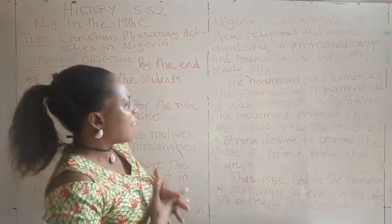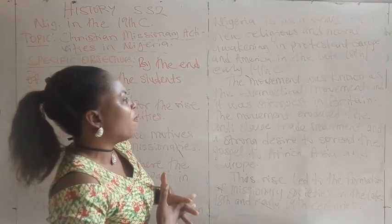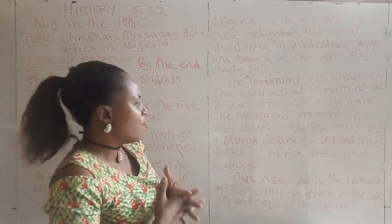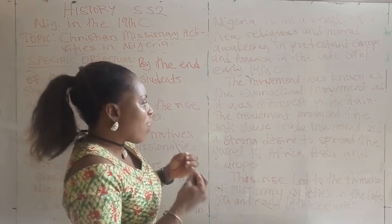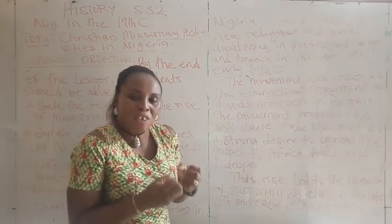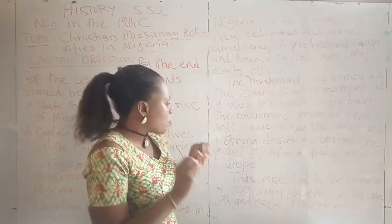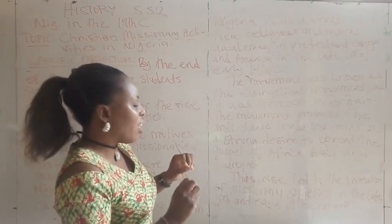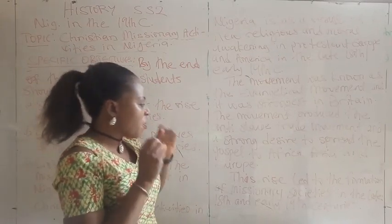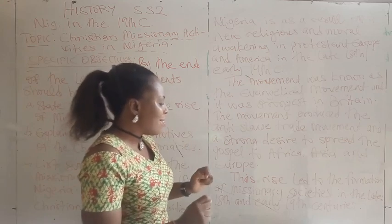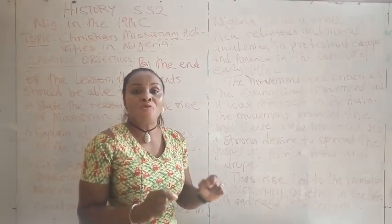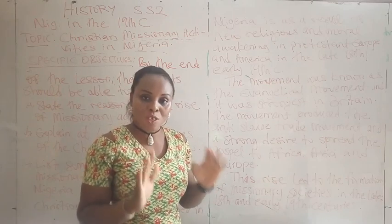That movement was known as the evangelical movement. The movement produced the anti-slave trade movement, and that anti-slave movement had a strong desire to spread the gospel, especially to Africa, Asia, and even Europe. So the rise led to the formation of missionary societies in the late 18th and early 19th century.